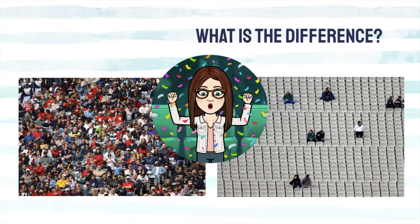What is the difference between these two stands? One is very dense because it has a lot of people sitting in the rows. The other picture is less dense because there's only a few people sitting in the rows. There's more stuff, more matter, in the picture on the left.